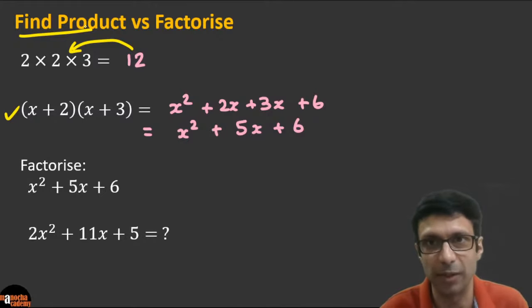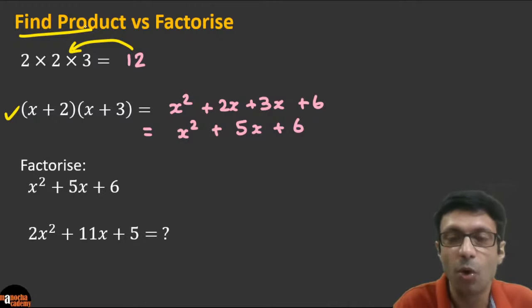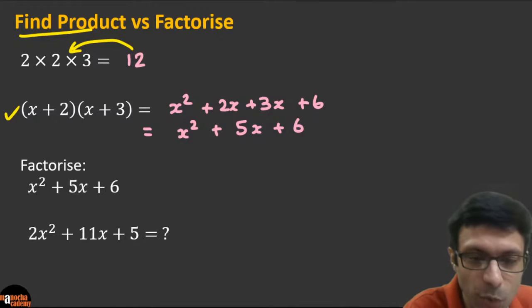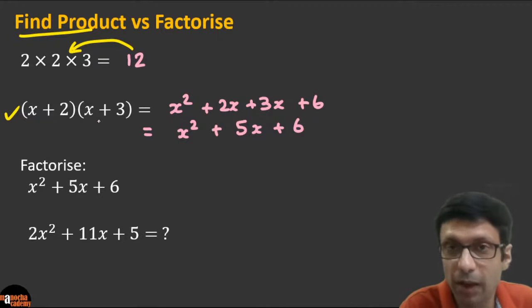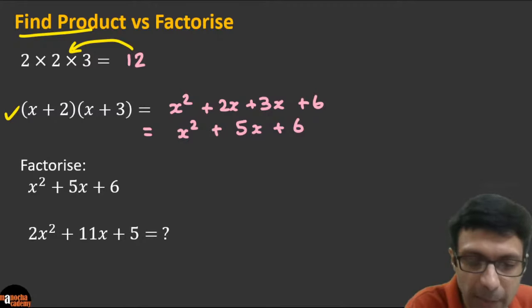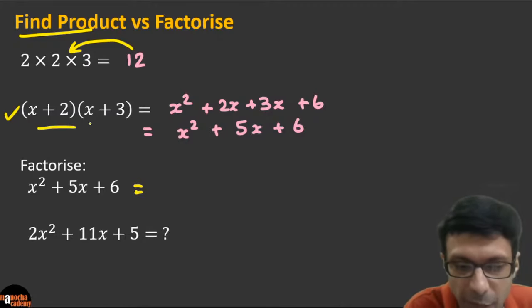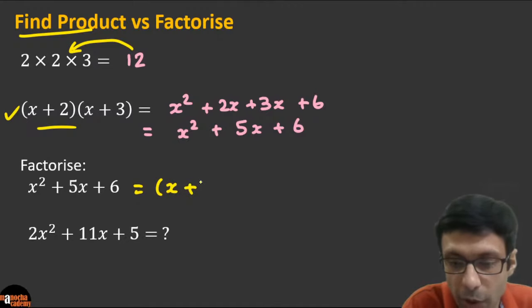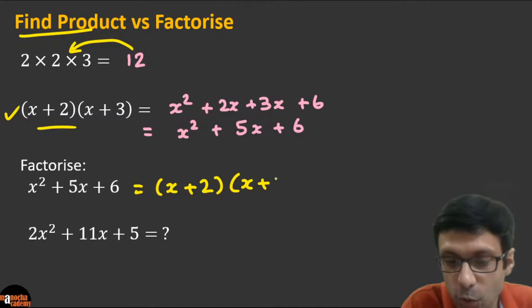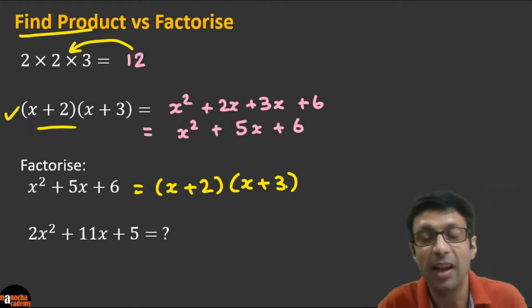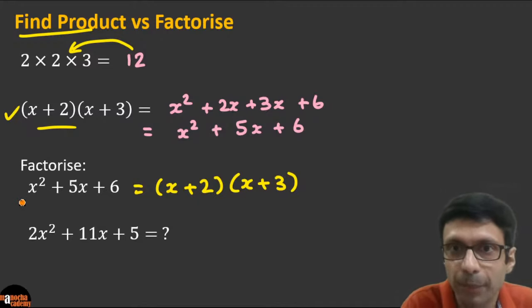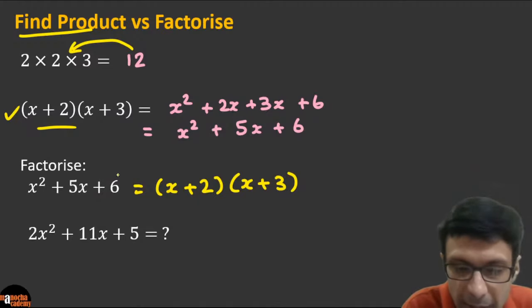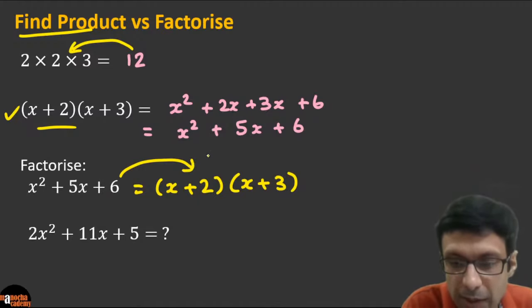Factorization is exactly the opposite. For factorization, we turn the sum into a product. If we want to factorize x² + 5x + 6, the answer is going to be (x+2)(x+3). In factorization, we are turning the sum of terms of a polynomial — x² + 5x + 6 — into a product.